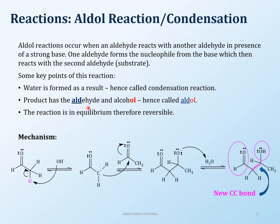Aldol reactions are very specific. Aldol is actually the product — it's not the starting material. Aldol reactions occur when an aldehyde reacts with another aldehyde in the presence of a strong base. We've talked about the fact that when you have an aldehyde or a ketone, you can use a base to abstract the alpha proton.